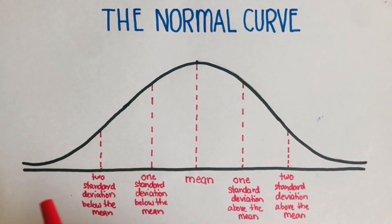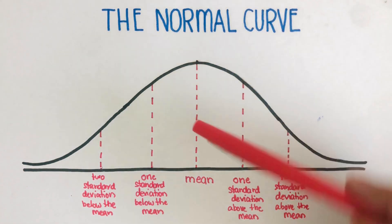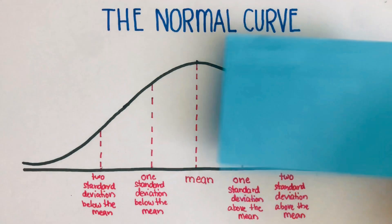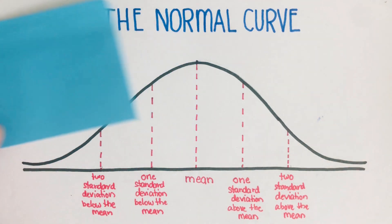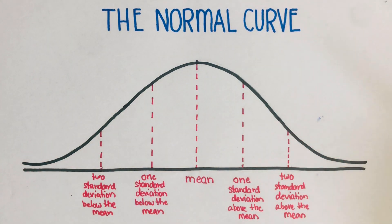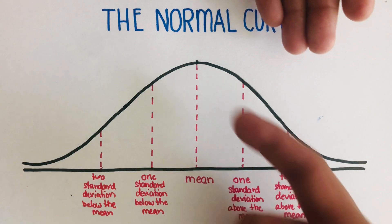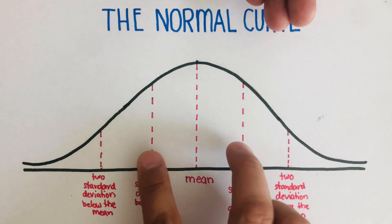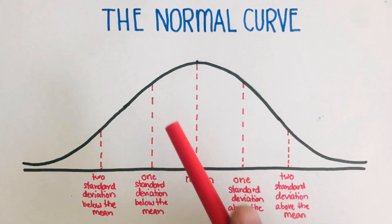The normal curve is sometimes called the bell curve because the shape of this curve is like a bell. Notice that the center of the normal curve is the mean, and this mean divides the curve into two parts: the left side and the right side. These two sides are symmetric to each other — symmetric means if I fold this curve through the mean as the axis of symmetry, these sides are going to be on top of each other.